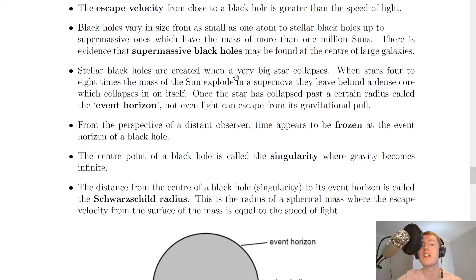Stellar black holes are created when a very big star collapses. When stars four to eight times the mass of the sun explode in a supernova, they leave behind a dense core which collapses in on itself. Once a star has collapsed past a certain radius called the event horizon, not even light can escape from its gravitational pull. We'll talk more about this in another video when we look at the evolution of stars.